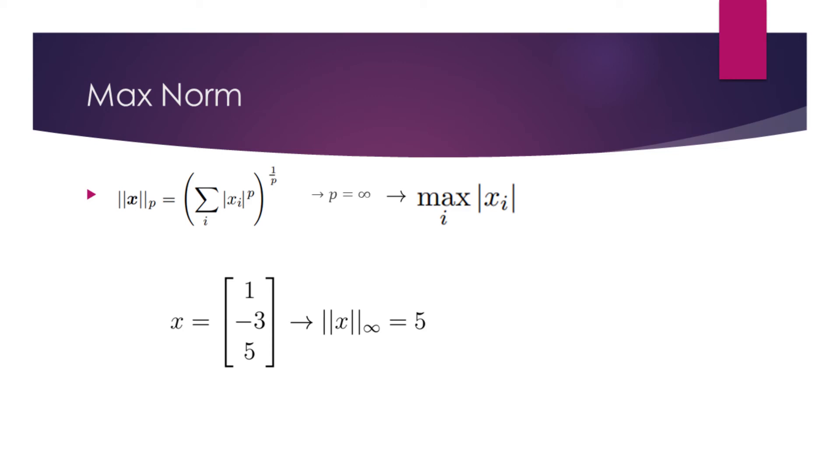Max norm, as the name implies, simply means to find the element with largest absolute value. In our vector x, the number with largest absolute value is 5. So the max norm of the vector x is 5.